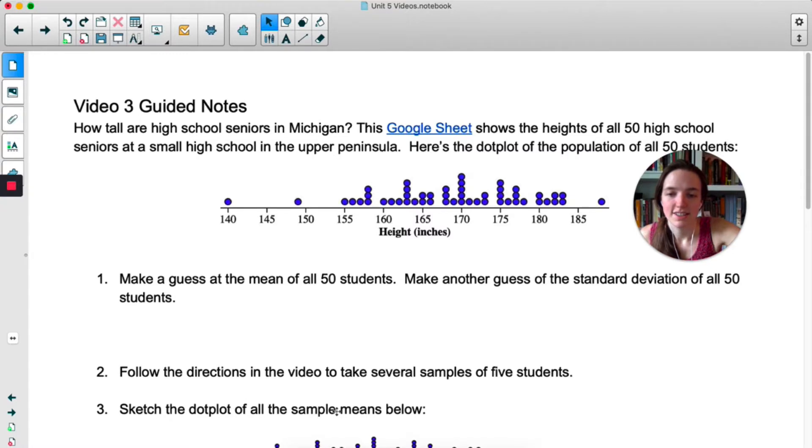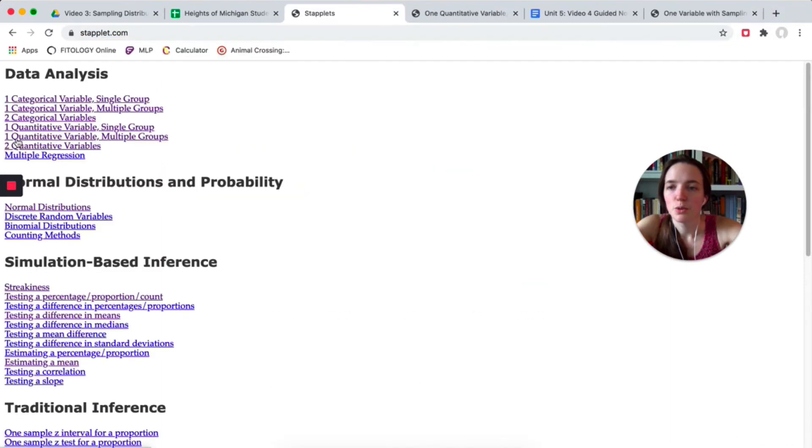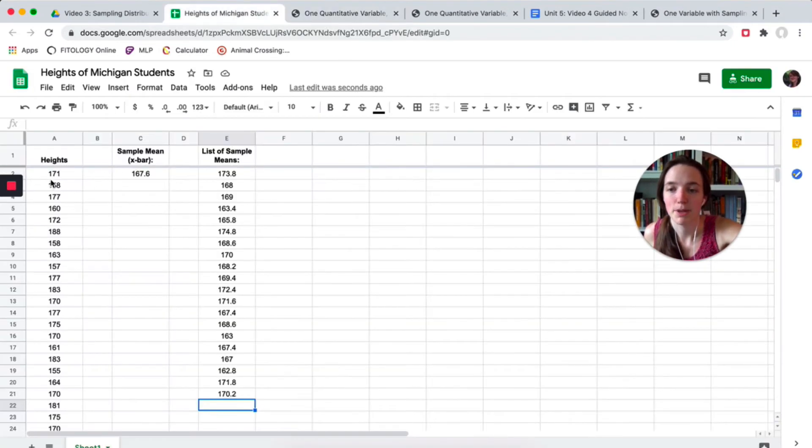Then it says to sketch a dot plot of these sample means. Now it's going to be easiest if you can compare the population to your dot plot of sample means, so what I would recommend you do is open up StatKey and do one quantitative variable multiple groups, have one of them be the population heights, and have one of them be the sample means. So for population, you'll copy and paste this column. For the sample means, you'll copy-paste this column.